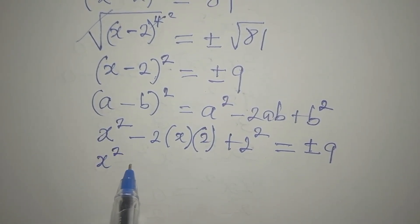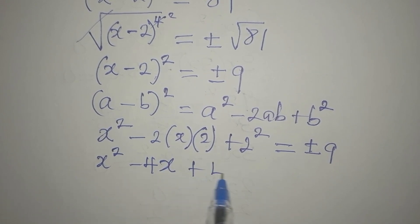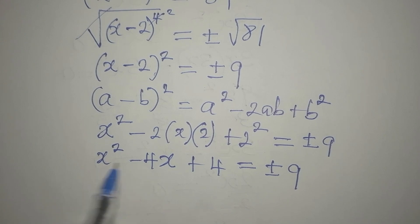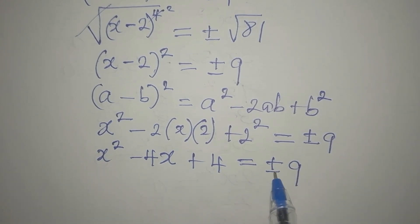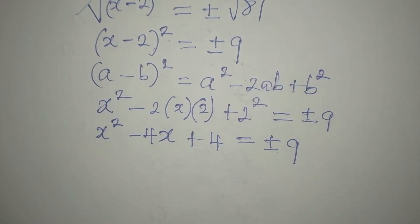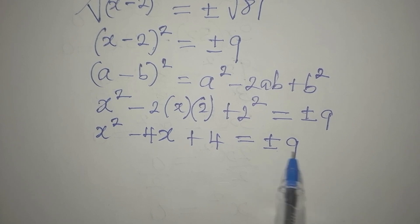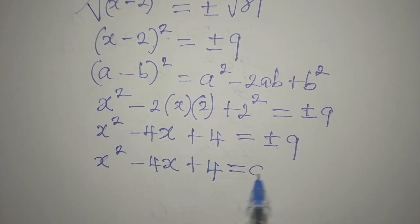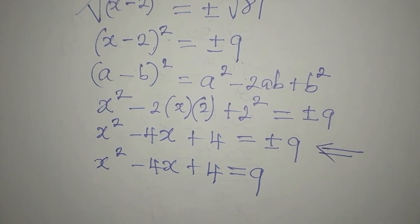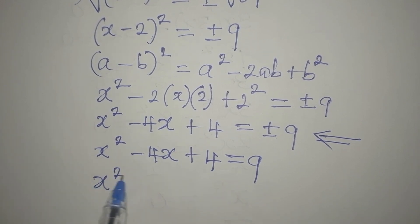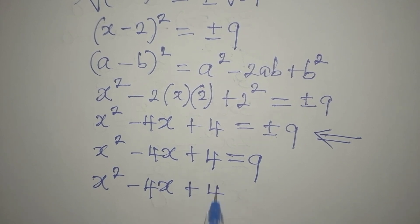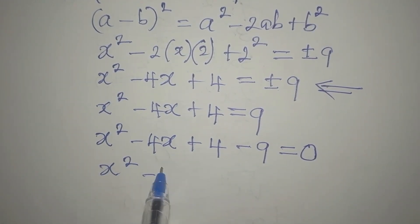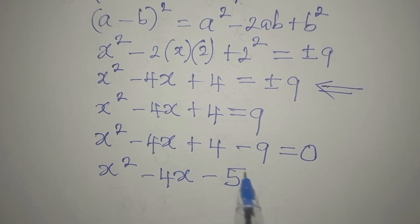So x squared minus 4x plus 4 is equal to plus 9 or minus 9. We're having two equations from here — one where 9 is positive and the other where 9 is negative. Let's pick the case where 9 is positive, so we have x squared minus 4x plus 4 equals 9. Bringing this to the left, we get x squared minus 4x minus 5 equals 0.